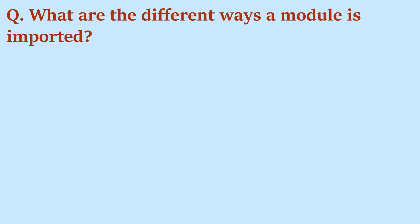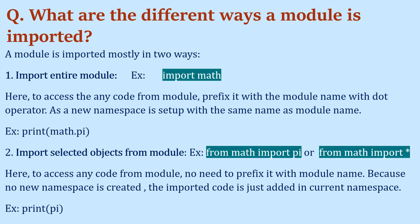What are the different ways a module can be imported? There are broadly two ways: importing the entire module and importing selected objects from the module. For the first case, you write 'import module_name'. Here you access functions or code from the module using the module name as a prefix with a dot operator — for example math.pi or math.pow() — because a new namespace is set up with the module name when it is imported.